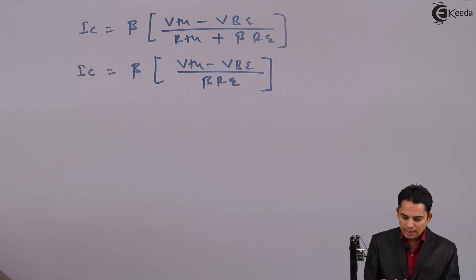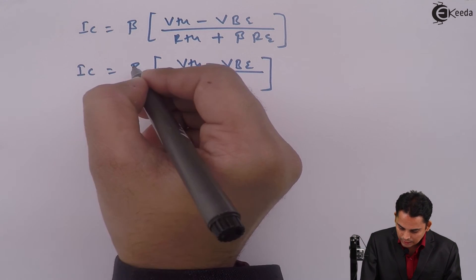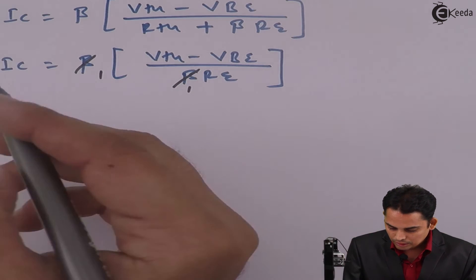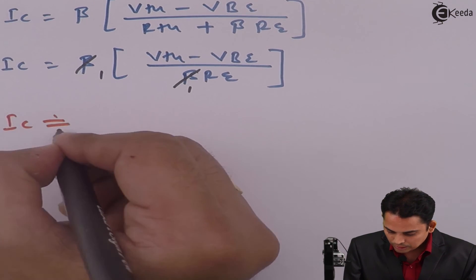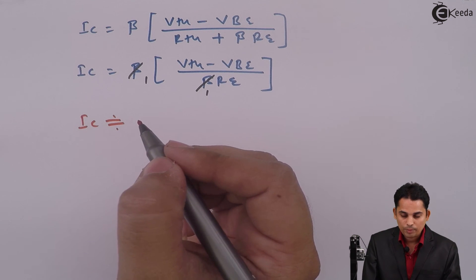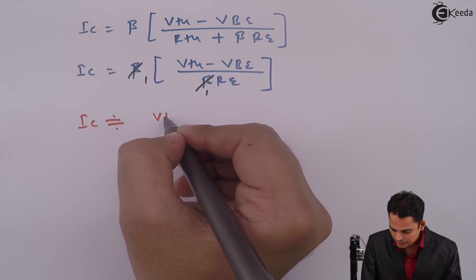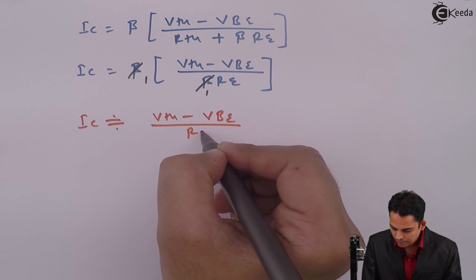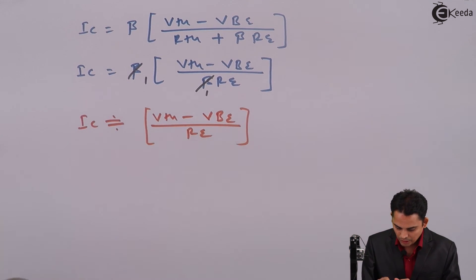If we cancel this beta, the equation of IC becomes approximately (Vth minus Vbe) divided by RE. And this is how in voltage divider bias, collector current IC is independent of beta. Thank you.